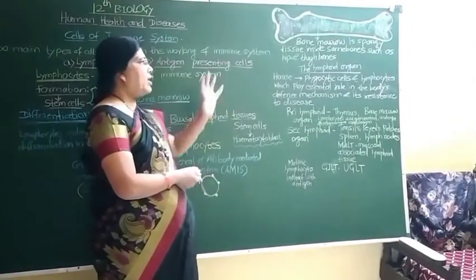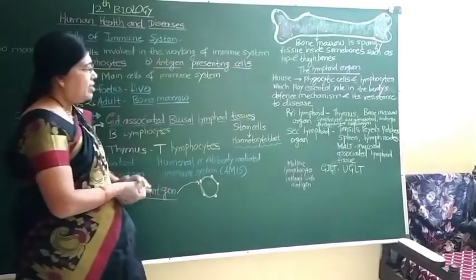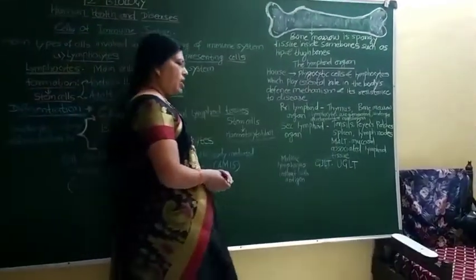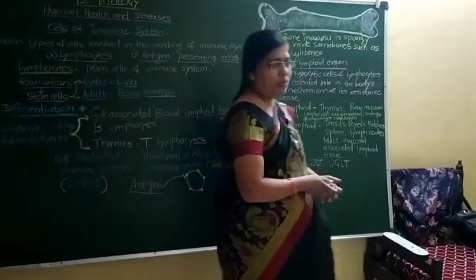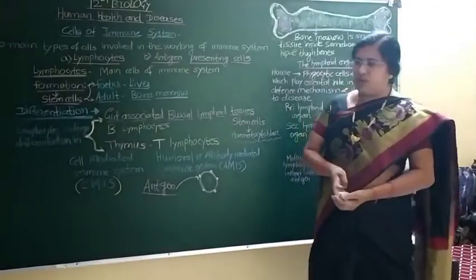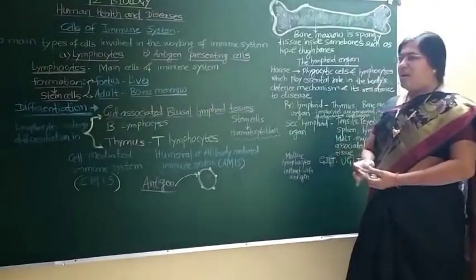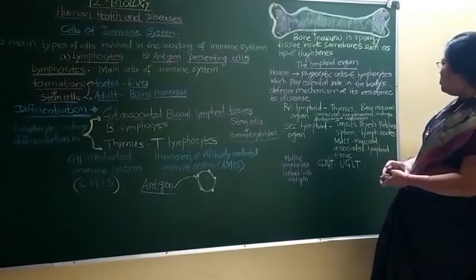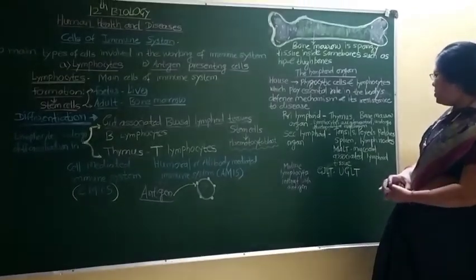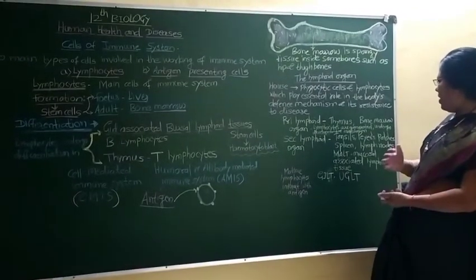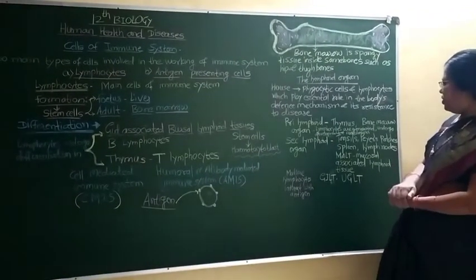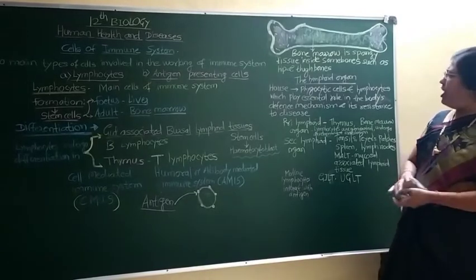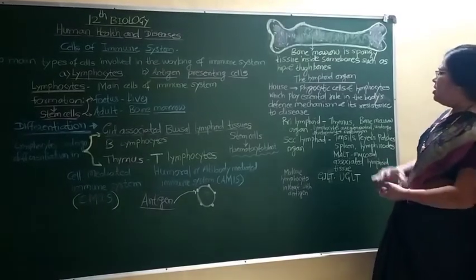What is a lymphoid organ? The lymphoid organ is where lymphocytes are produced, where they mature, and where they interact with antigens. That is the lymphoid organ.